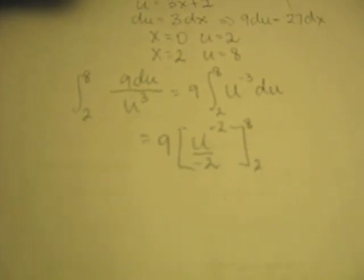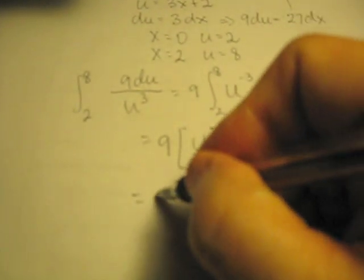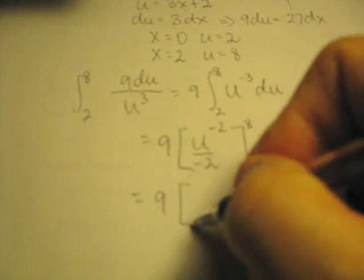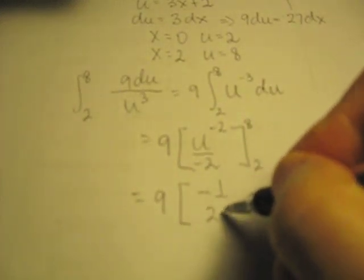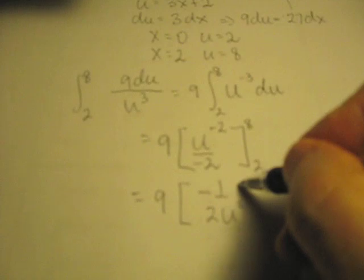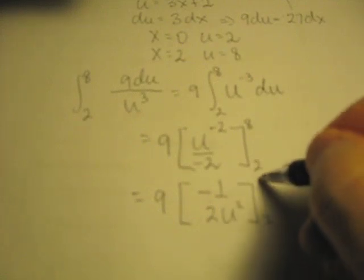We're now employing the... let me simplify it first. So we'll end up with this being negative 1 over 2u squared, between 2 and 8.